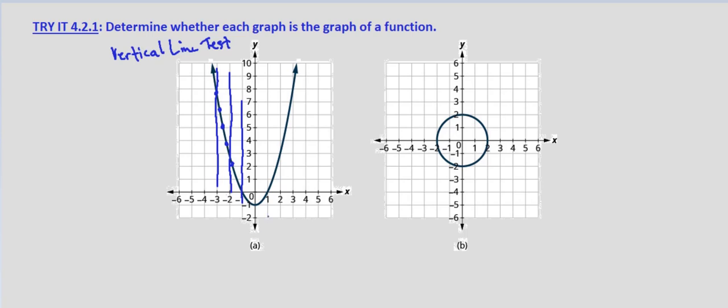In part a, we've already shown it doesn't matter where we draw a vertical line, it's only going to intersect the graph in one place. We can look at any point on the graph and it's going to be one x value and one y value.